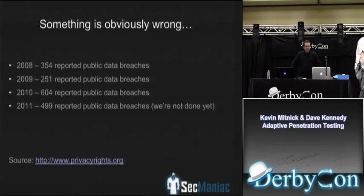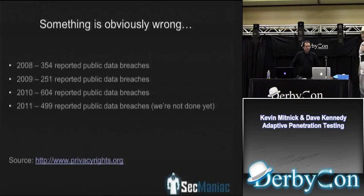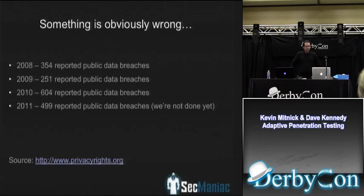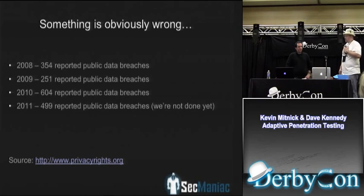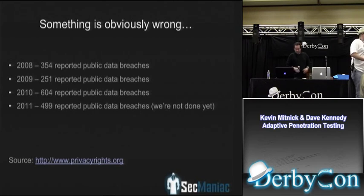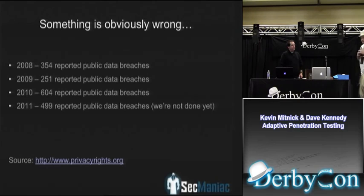Obviously something is wrong. We're seeing an elevated number of breaches - these statistics are taken from privacyrights.org. From 2008 to 2011, there's exponential growth in companies actually receiving breaches. Some may say we're getting better at detection, but from Forrester, around 70% of them had been in breach for several months or years without actually knowing they were compromised. With the industry growing, you'd think we'd start to stop some of these attacks, but what we're seeing is it's not really happening.